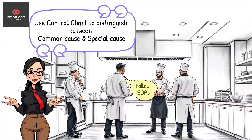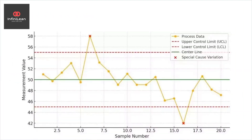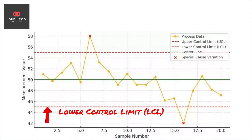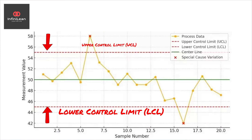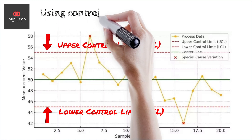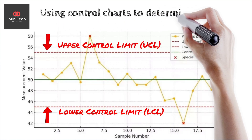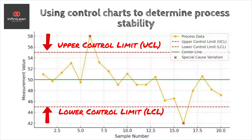How do you identify common cause variation in your process? Statistical tools, like control charts, can be highly effective. These charts help by visually representing process stability and identifying trends over time. If the data points within a control chart consistently fall within the control limits, the process is stable, and any variation present is likely a common cause.